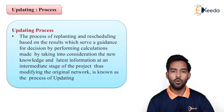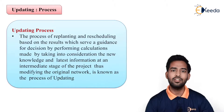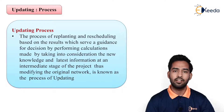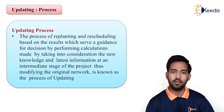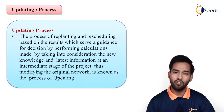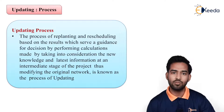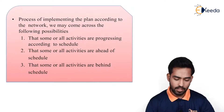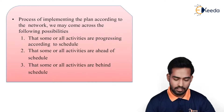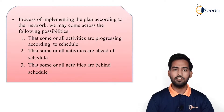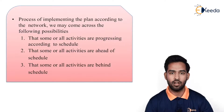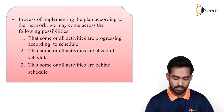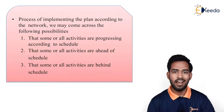For example, if a project is going on and a new technique is introduced, we have to incorporate it into the project so that delays are reduced or the speed of work gets motivated. Similarly, if some new equipment comes to market, we can use that equipment. The process of changing the original network and reconstructing is known as the process of updating. When implementing the plan according to the network, we may come across the following possibilities: some or all activities are progressing according to schedule; some or all activities are ahead of schedule; and some or all activities are behind the schedule. These are the three possibilities which may happen in any construction project.